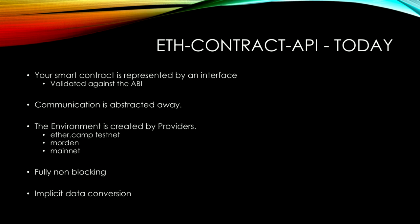I've been working on it for quite some time, and today what you can already do is that your smart contract is represented by a Java interface that will be validated against the ABI, so that the parameter inputs and outputs are correct. All the communication is abstracted away, so you don't need to think about how to set up your node or how to connect via RPC. You will have a provider to connect to it and then simply use it. There are pre-defined providers for the EtherCAM testnet, the Morden testnet, and the mainnet. It's fully non-blocking, so you get a future back and when it's done, it's done. And as much as possible, implicit data conversion.